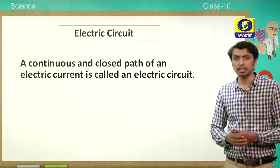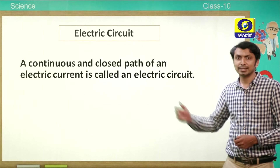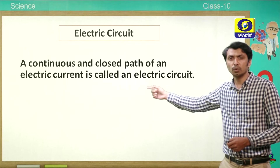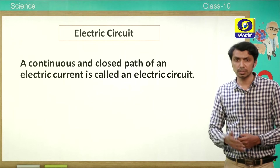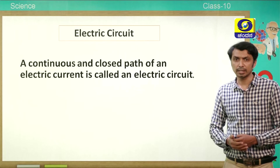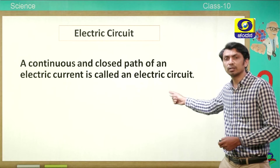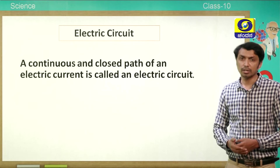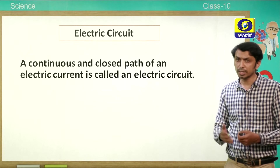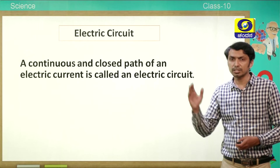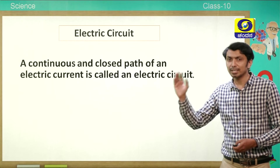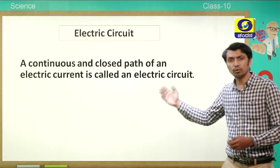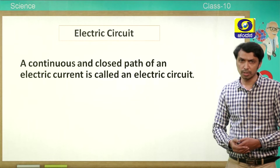Electric current flows only when the circuit is closed. A continuous and closed path for electric current is called a closed circuit. We need to arrange the components in a specific manner for the electric current to flow inside the circuit.